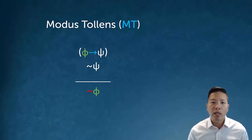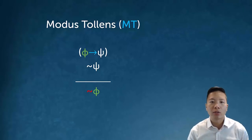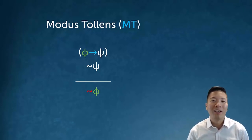For example: if it's raining, then the sidewalks are wet, but the sidewalks are not wet — then I know that it's not raining. Modus ponens and modus tollens are the two deductively valid rules we can use for a conditional statement.